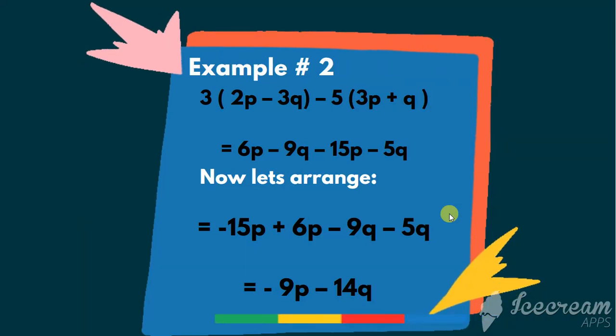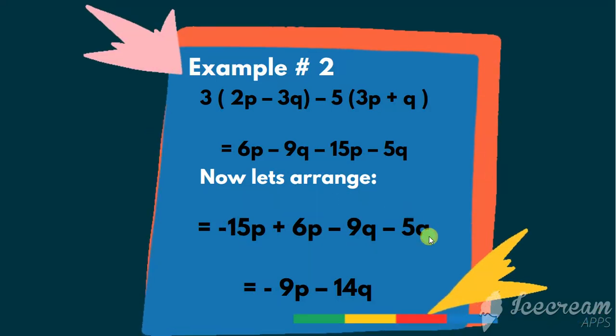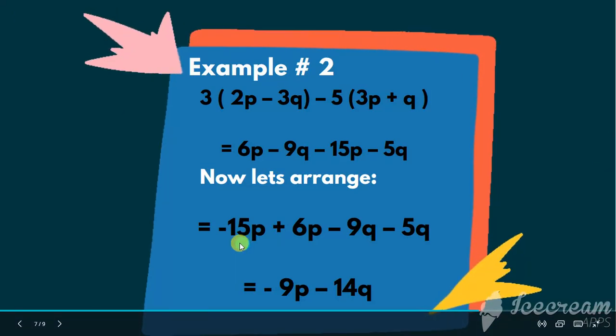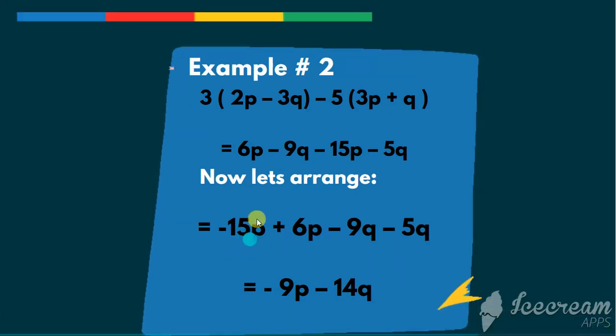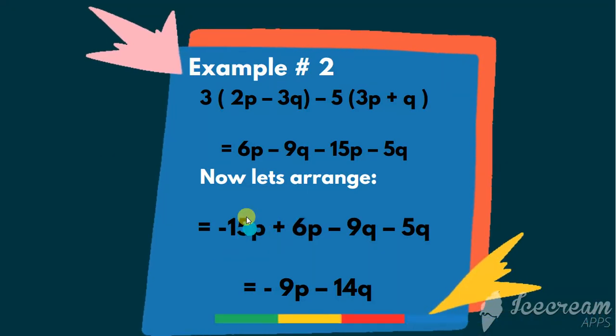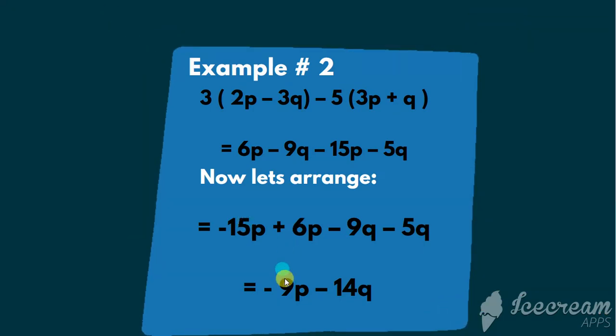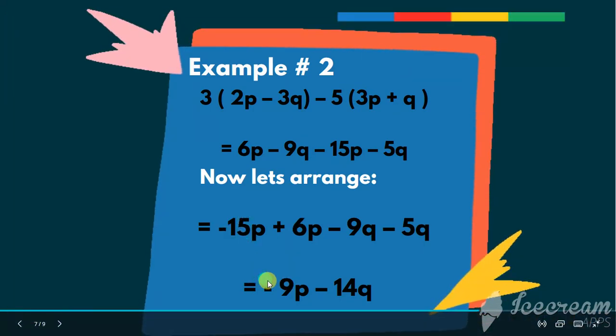Now let's arrange. Here are different signs and here are same signs. So if we have this different sign, so we have to subtract and keep the sign of the bigger number. So 15 minus 6 is 9 and the bigger number sign is minus. So here is minus 9p.